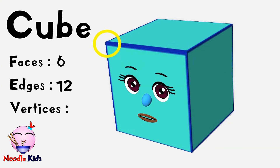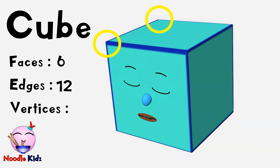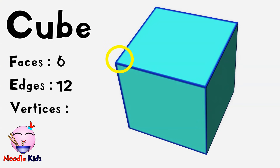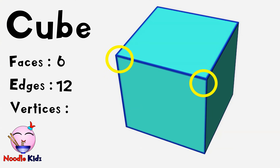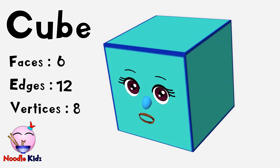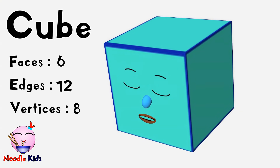One, two, three, four, five, six, seven, eight. Yep! A cube has eight vertices.